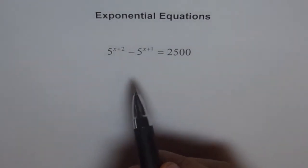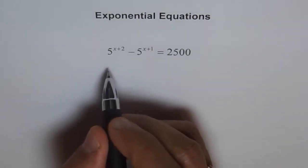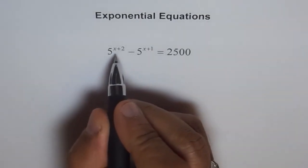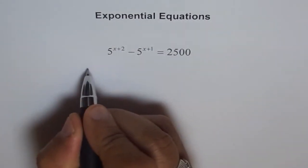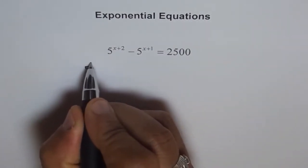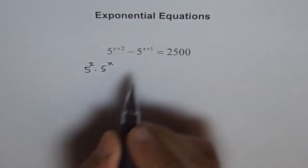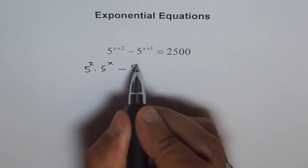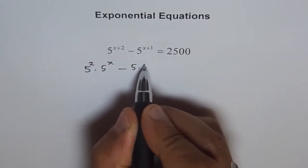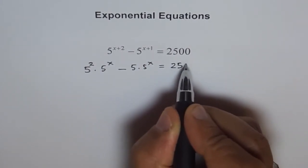Now what we can do is we can write 5 to the power of x plus 2 as product of 5 to the power of 2 times 5 to the power of x. We will write this as 5 to the power of 2 times 5 to the power of x minus similarly to the power of 1, we will write 5 to the power of 1 times 5 to the power of x equals to 2500.